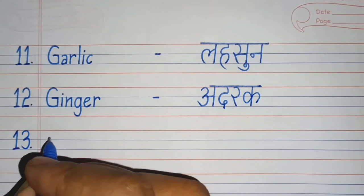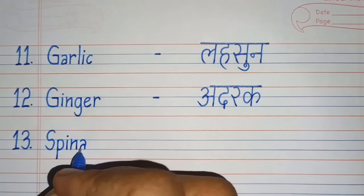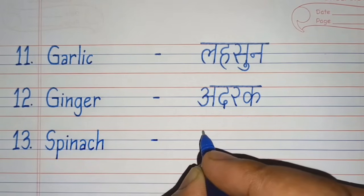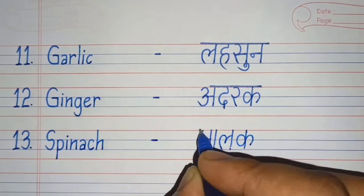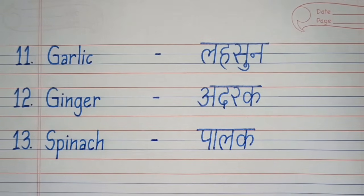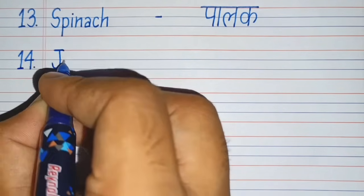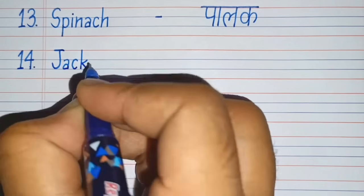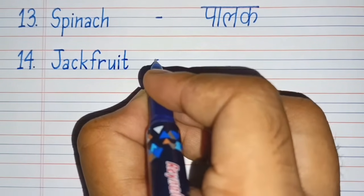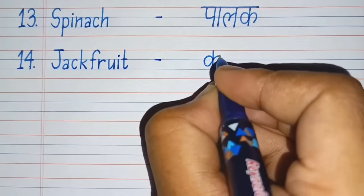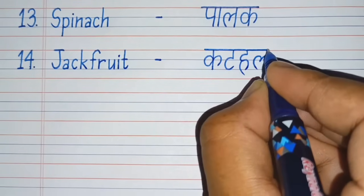Thirteenth number. S-P-I-N-A-C-H, Spinach. Spinach means Palak. Fourteenth number. Jackfruit. Jackfruit means Kathal.